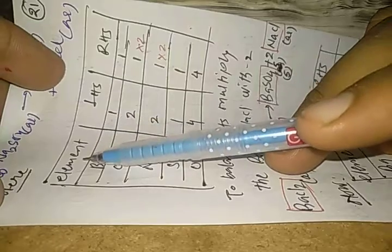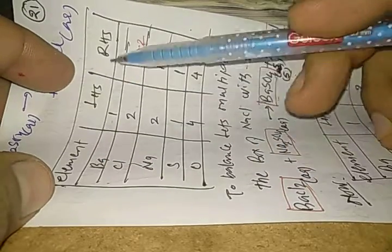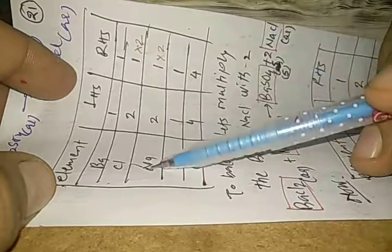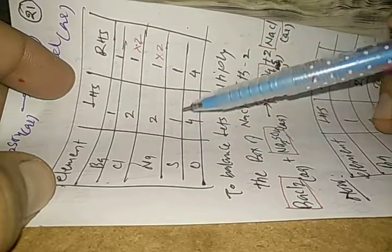In this particular equation, we have Ba: LHS 1, RHS 1; Cl: LHS 2, RHS 1; Na: LHS 2, RHS 1; Sulfur: LHS 1, RHS 1; Oxygen: LHS 4, RHS 4.